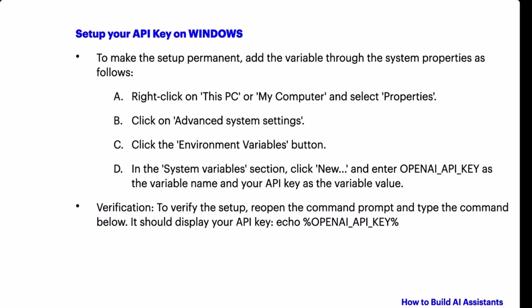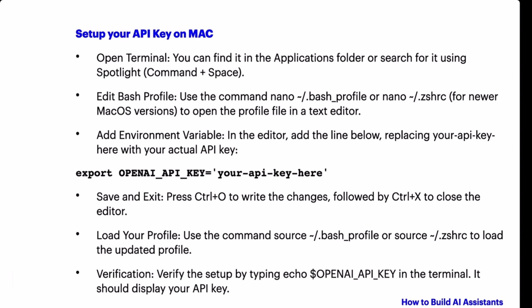For Windows, these are the steps you need to follow. You go to the properties of My Computer. You look at the advanced settings. You click on environment variables. You create a system variable called OpenAI API key and you store your API key in that variable. For Mac, you can edit the .bash_profile file or the .zshrc file for newer versions of Mac. You store the API key in these files and you are ready to go. I will upload these instructions and attach them to the lessons.